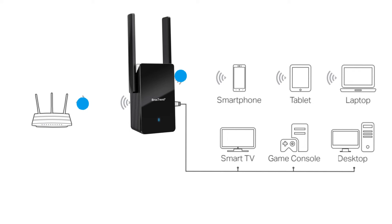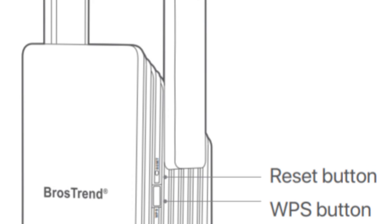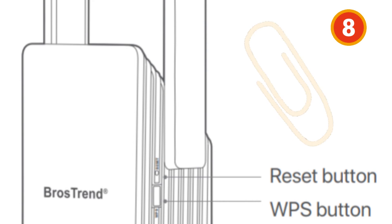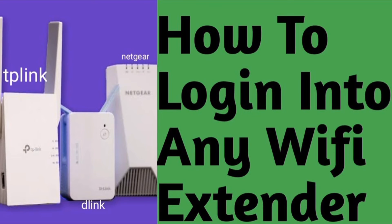If none of the above methods work for you, we recommend you reset the extender and then try the setup again. You can reset the Browstrand extender by inserting a paperclip into the reset hole for around 10 seconds while the extender is still plugged into the wall.